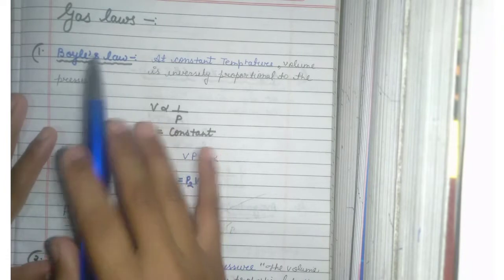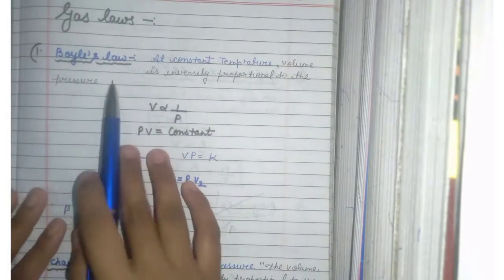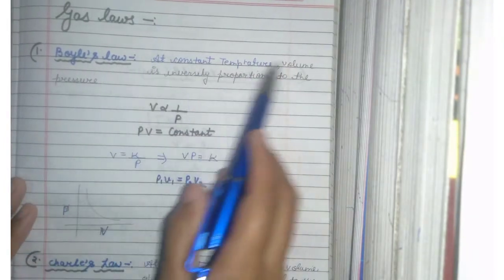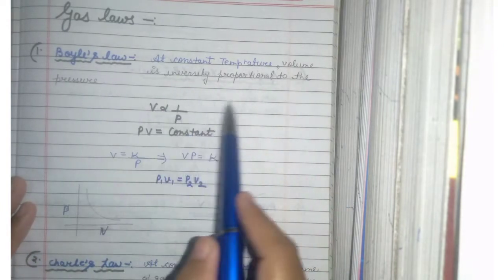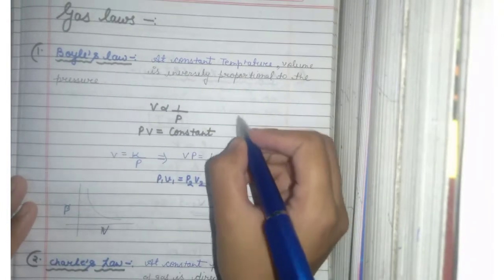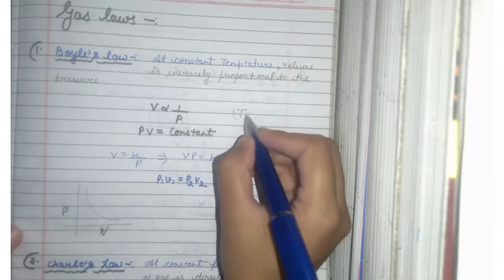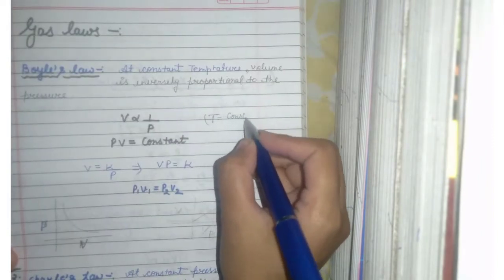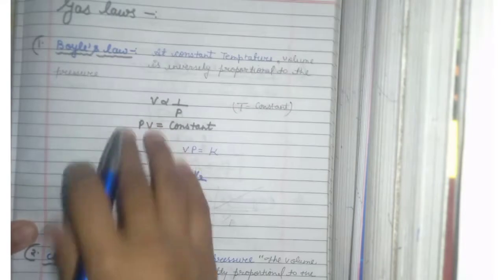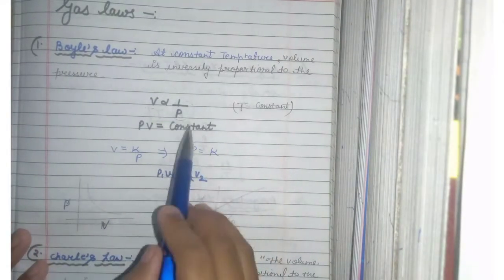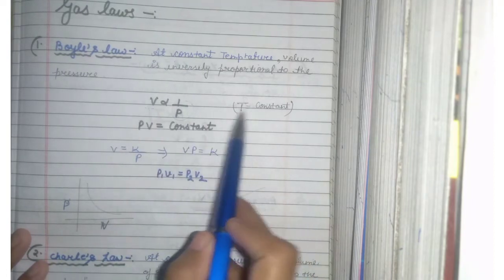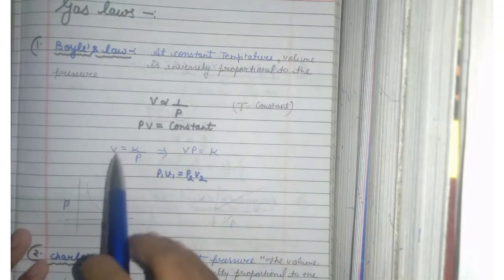Let's start. The first law is Boyle's Law. At constant temperature, volume is inversely proportional to the pressure. When you take the temperature, we take constant. Temperature is constant. What will happen? The volume is inversely proportional to the pressure.